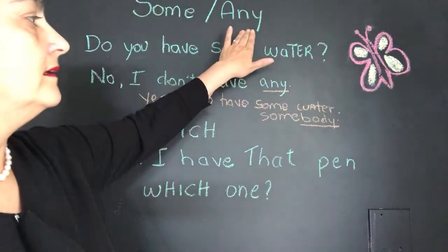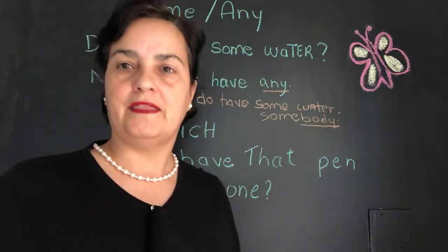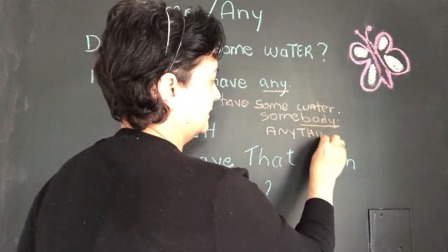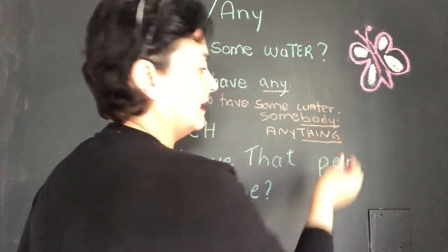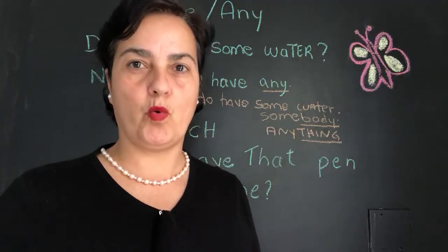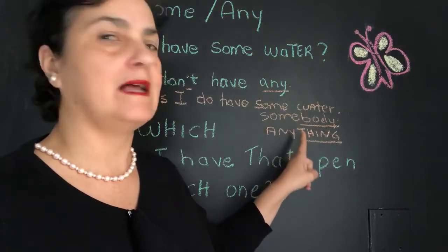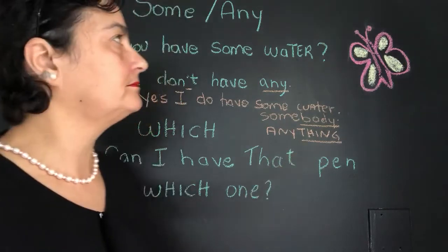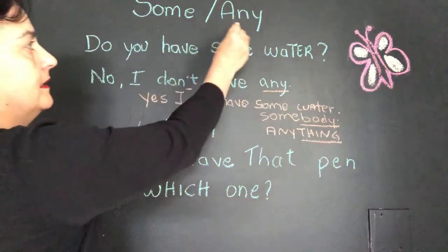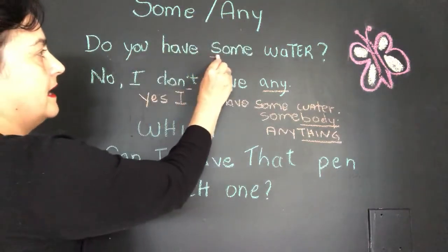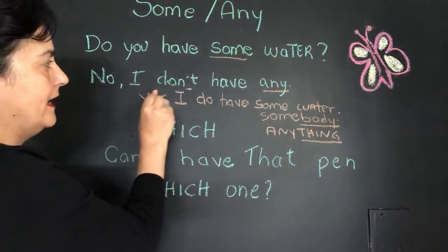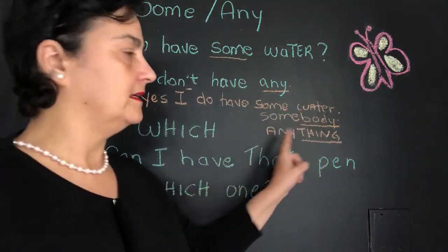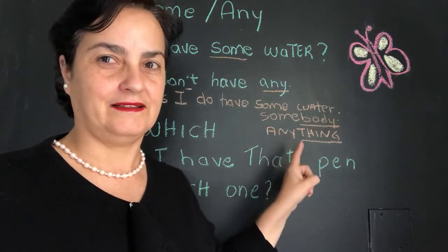E a mesma coisa do any: anything. Thing é coisa. Alguma coisa, ou nenhuma coisa. Você pode falar something, você pode falar anything. Ok, então vamos ver as palavras: some, any. 'Do you have some water?' 'No, I don't have any.' 'Yes, I do have some water.' Somebody. Anything.